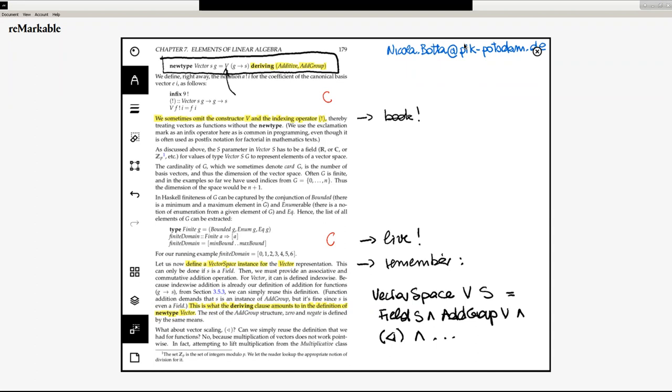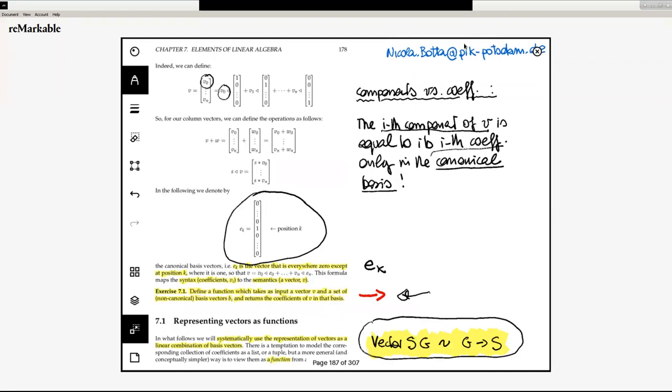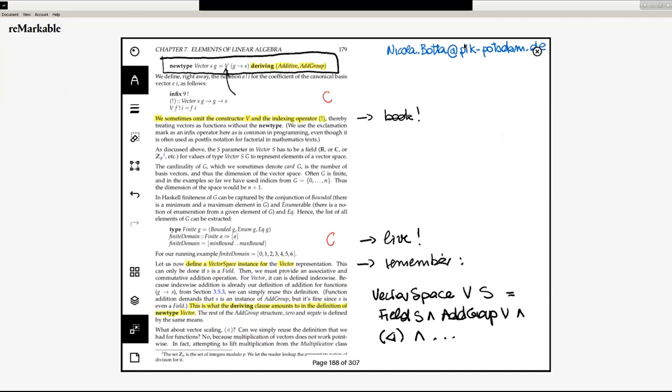This might appear a little bit strange at this point. But if you think of this idea that vectors are, in fact, tuples of numbers, this seems to be a special case. This seems to be a special case of vectors as being functions, in fact. And the special case that is obtained when the index set G is, in fact, finite. And this intuition is indeed correct, and this is one that we follow here.